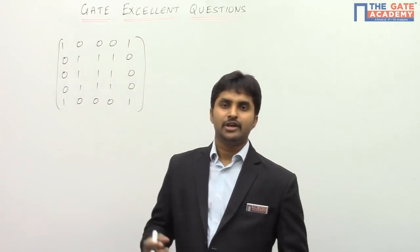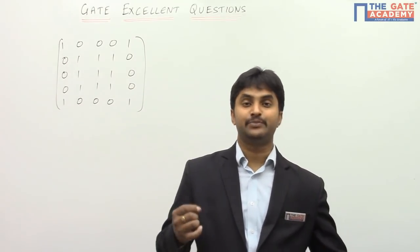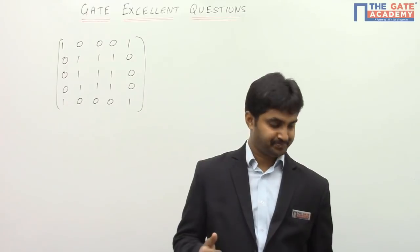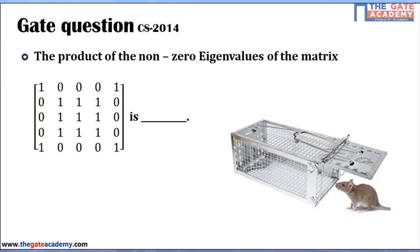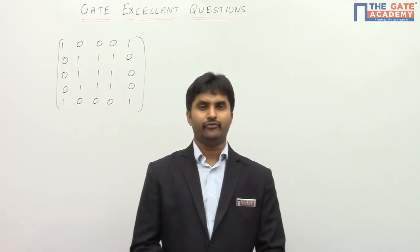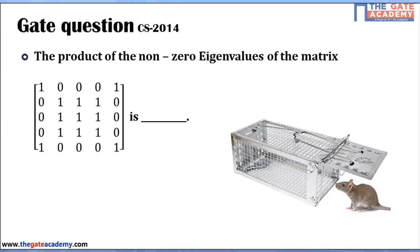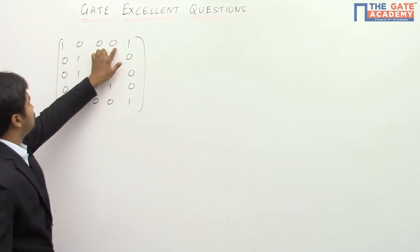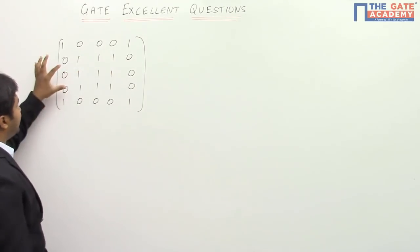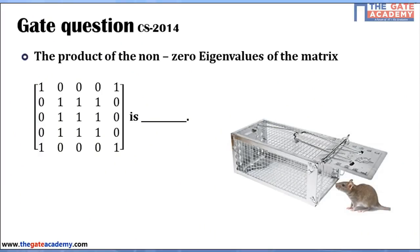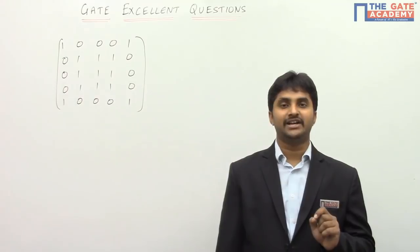The purpose of this question is to make sure you understand where students make mistakes. This belongs to the category of conceptual trap. The question belongs to the chapter of linear algebra, from the topic of eigenvalues and eigenvectors of mathematics. The matrix given is a 5×5 matrix: the first row is [1,0,0,0,1], second row [0,1,1,1,0], and rows repeat. The question asks: what is the product of the non-zero eigenvalues of the matrix?